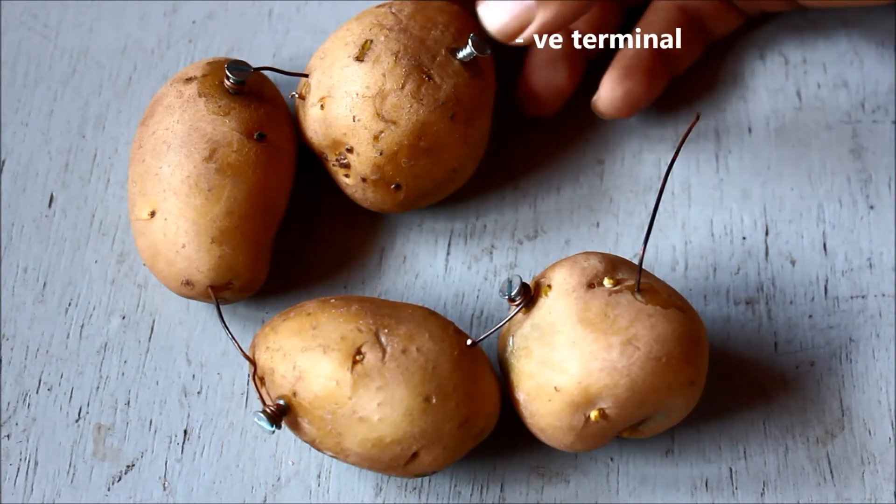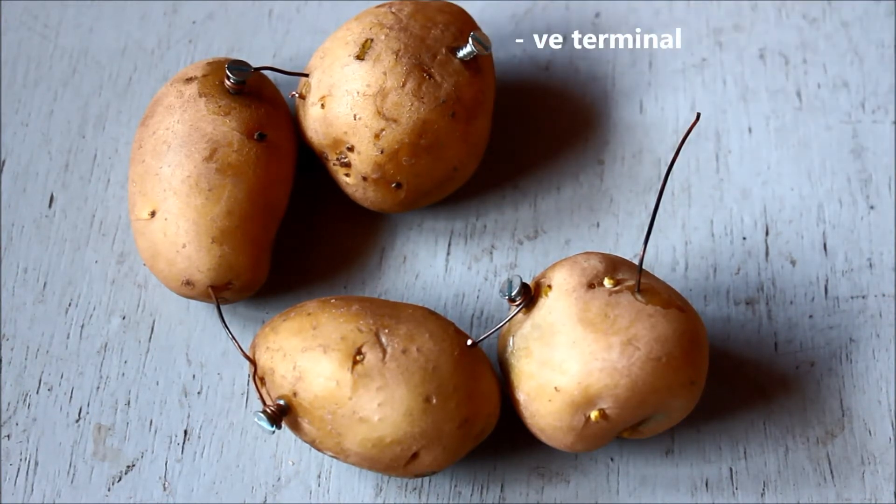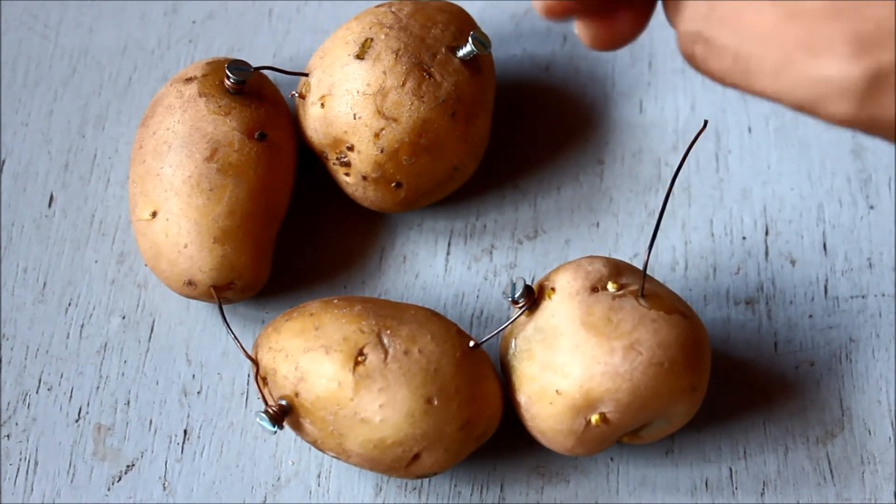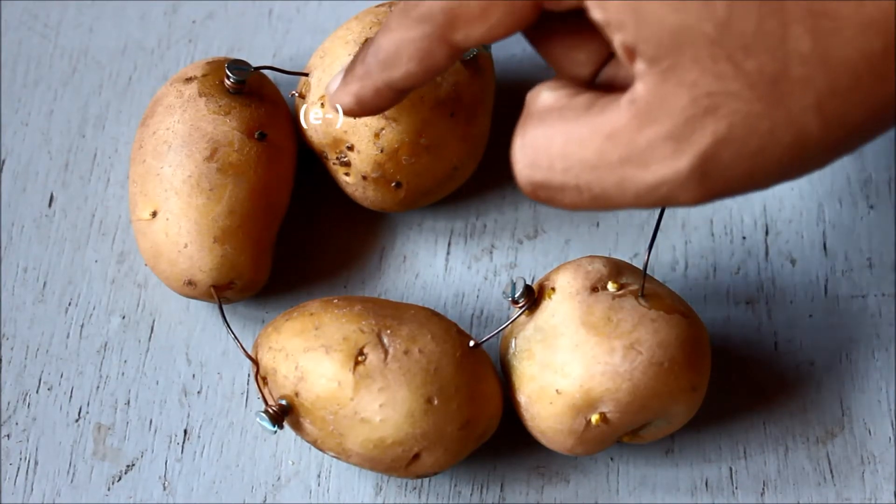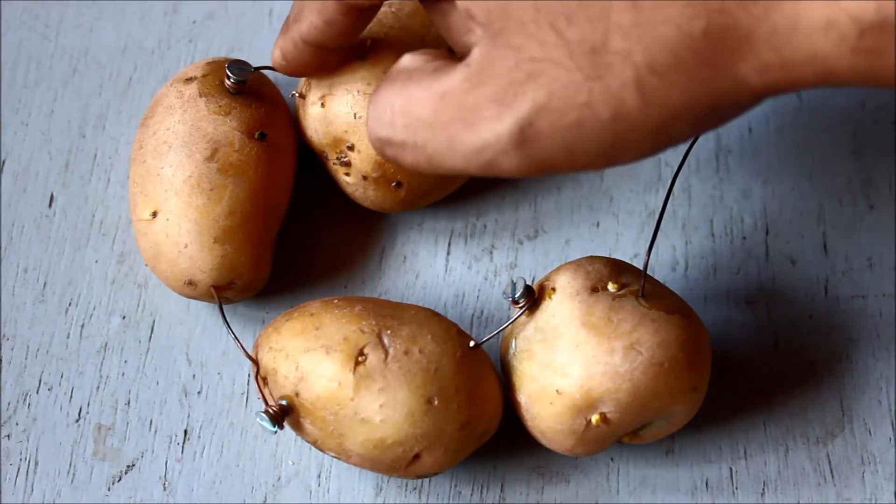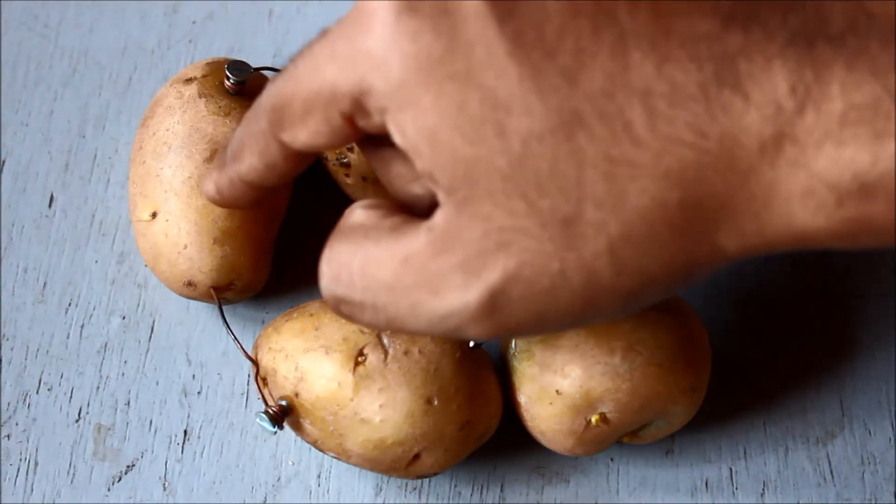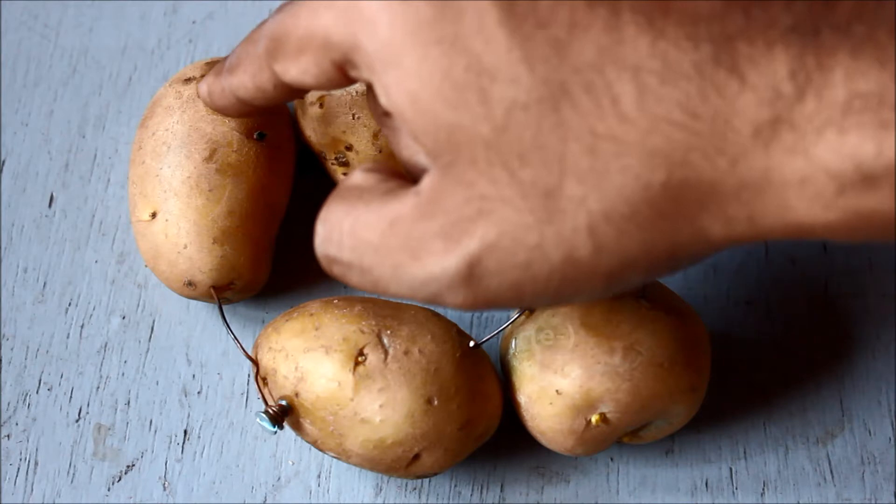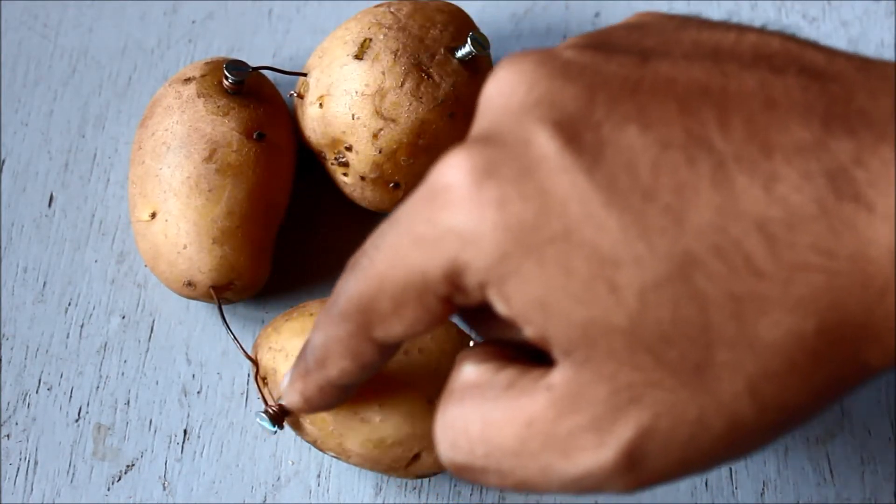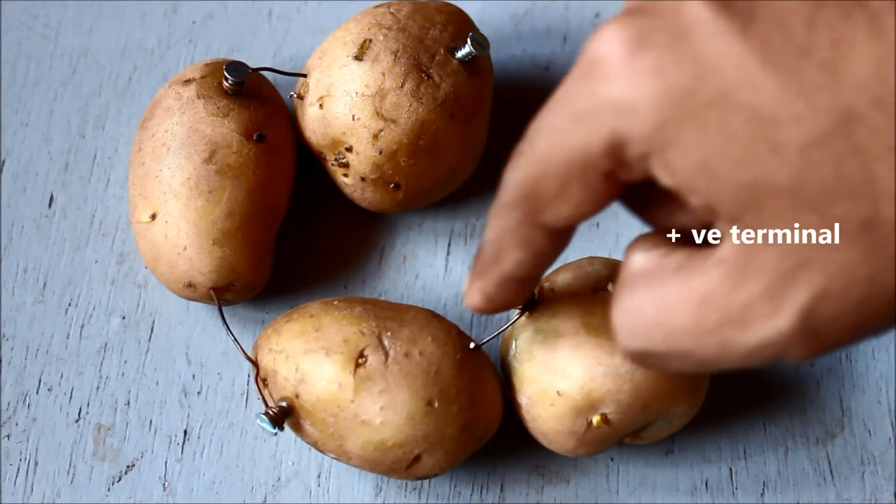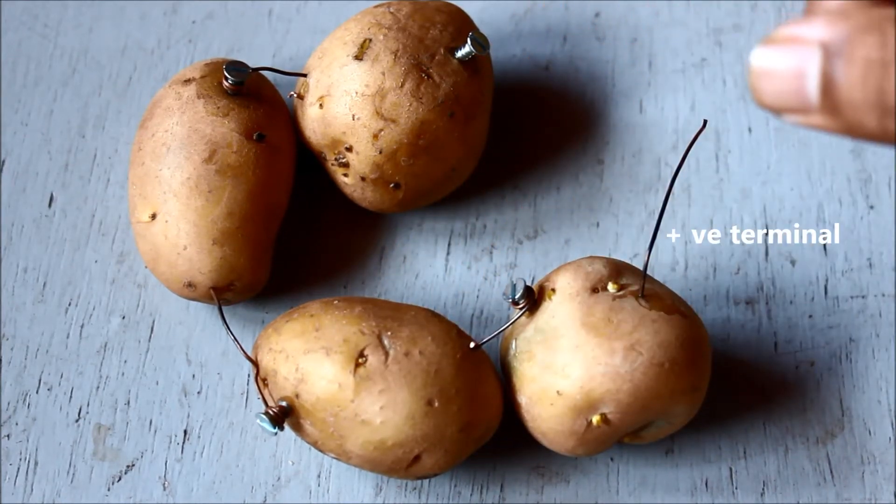A little bit of science over there. So we all know that electrons flow from negative to positive terminal. So the fourth potato which generates electricity, as we have inserted the copper wire into the third potato, the current adds up, and then it goes to the second potato and the current adds up even more, and then to the first potato, and then it goes to the positive terminal which is your copper wire of the first potato.